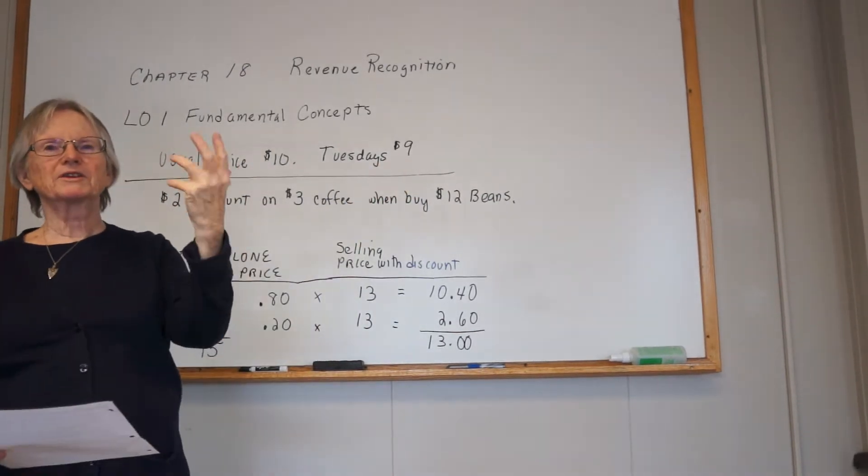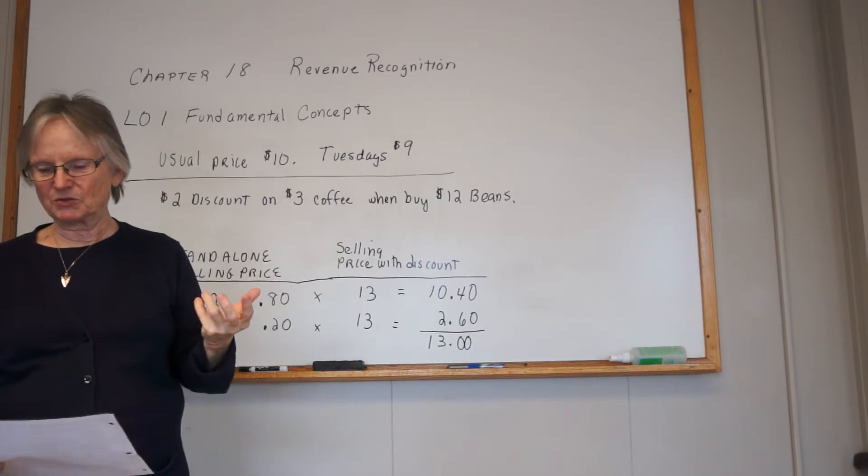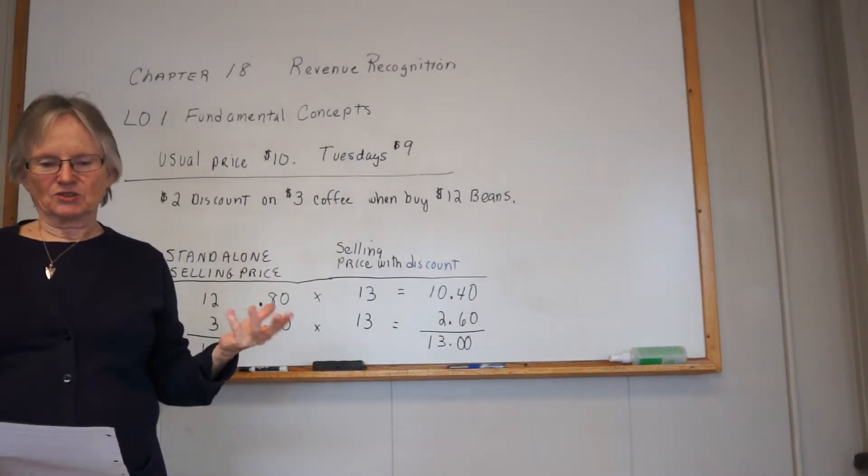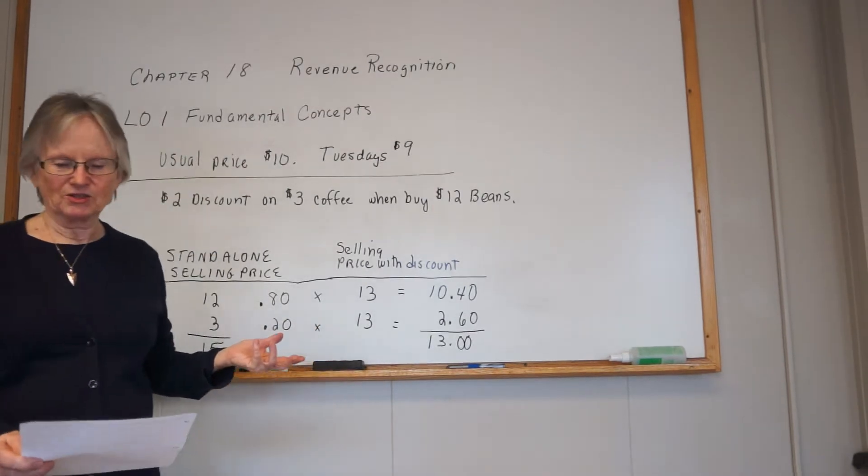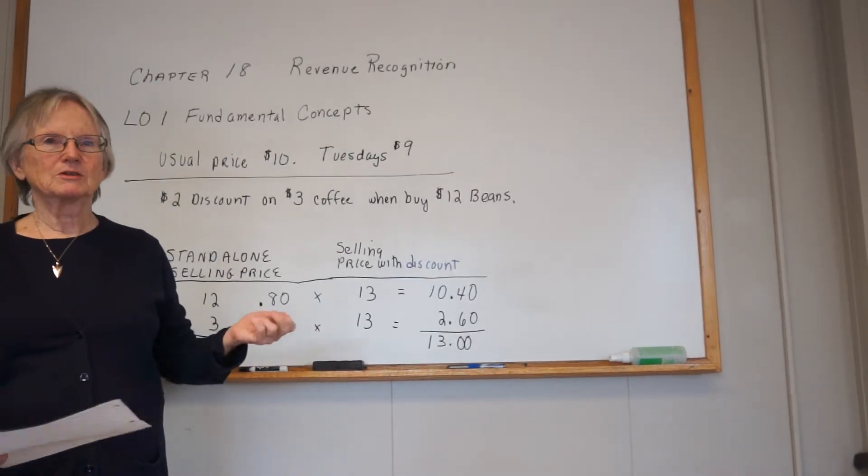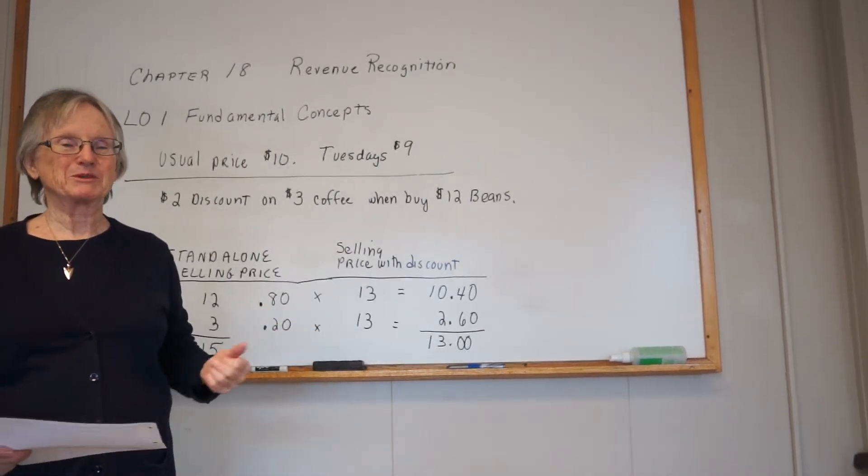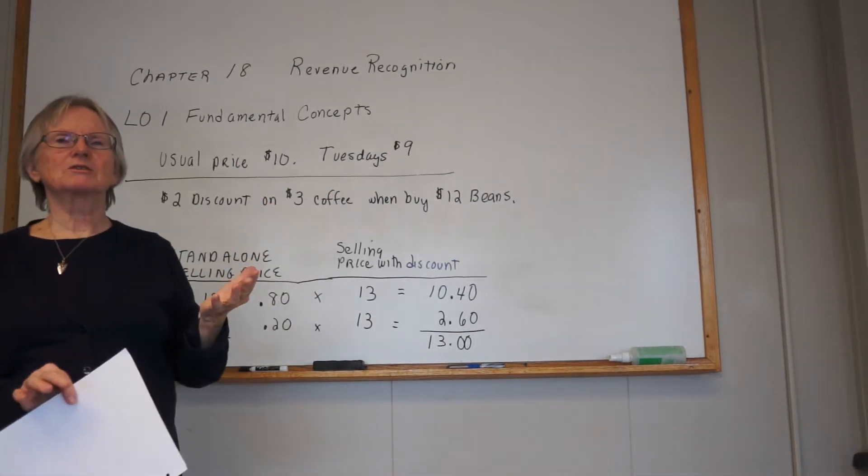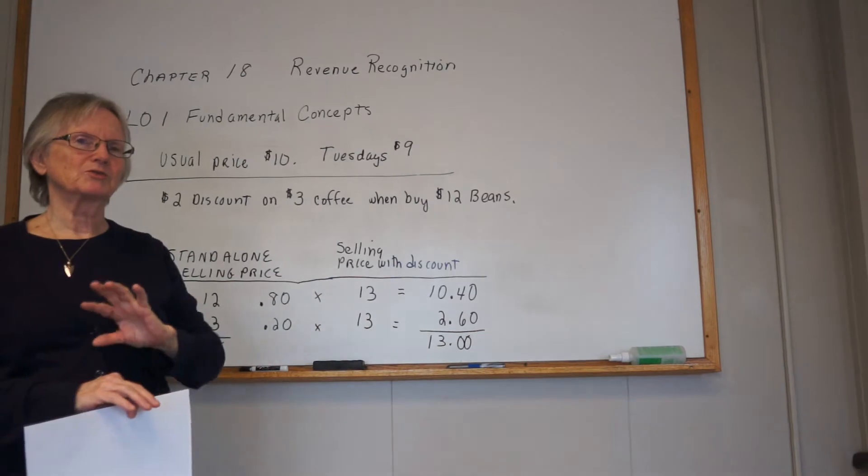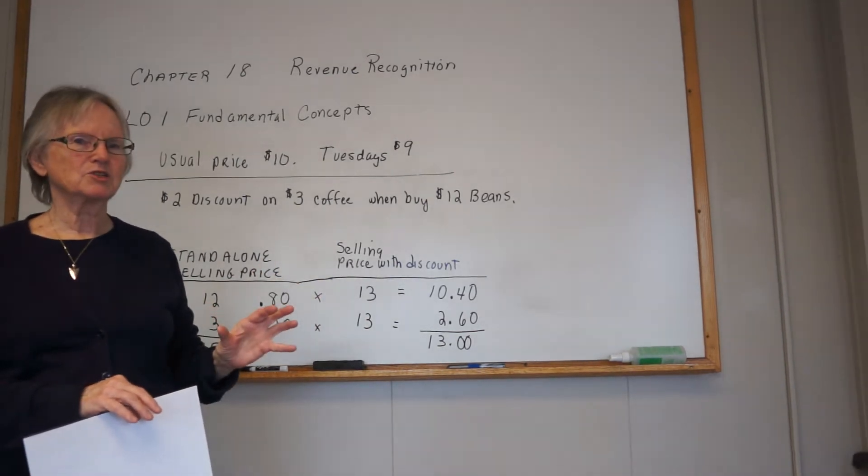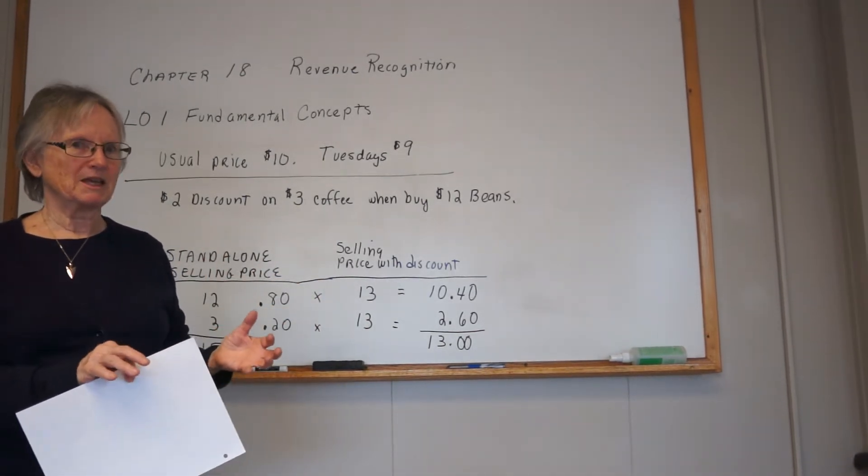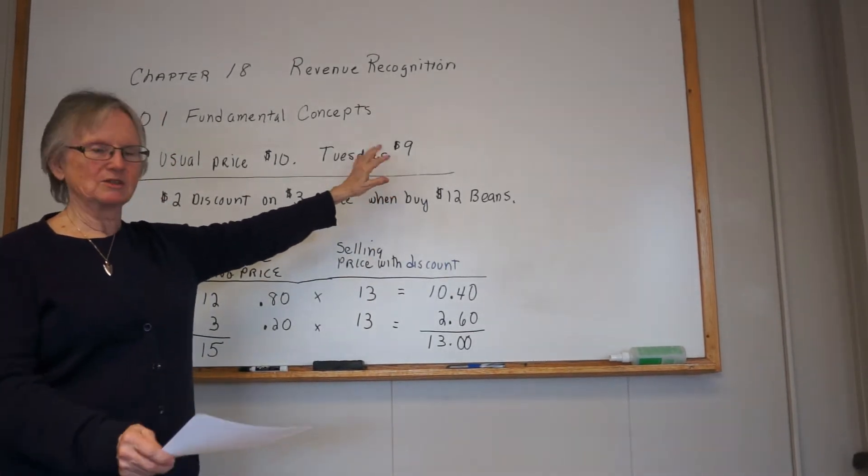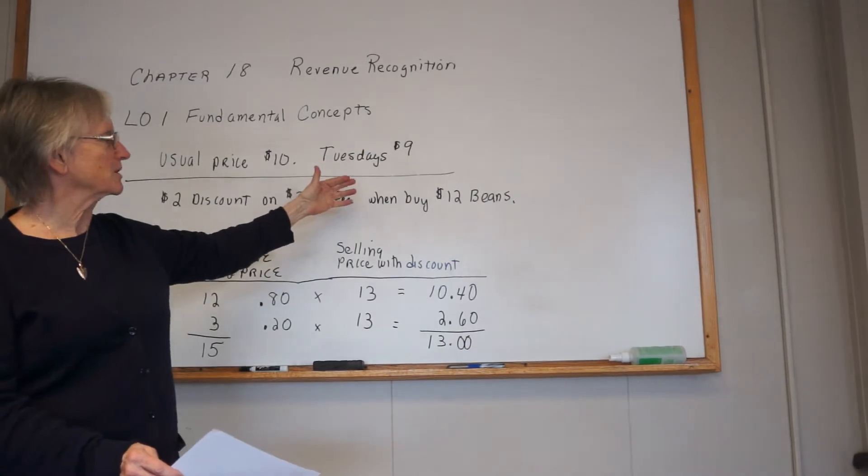We don't have to allocate it because there's only one performance obligation, and you would recognize the revenue when it happened. This is similar to how accounting has always ignored the list price or advertised price - it starts out with the exchange price paid. So this would be the exchange price paid; it's the consideration that the company expects to receive.